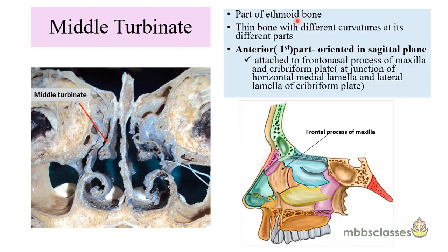The middle turbinate is a part of the ethmoid bone. In the coronal section of the cadaveric dissection, this is the middle turbinate. It is not straight in configuration — rather it curves in different planes at different parts. For clinical purposes, we divide the middle turbinate into three parts based on its orientation: the anterior part, the middle part, and the posterior most part, each oriented differently.